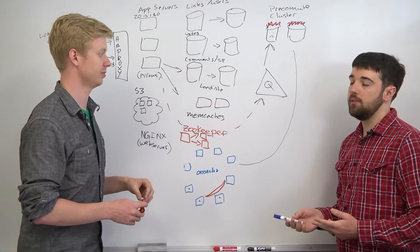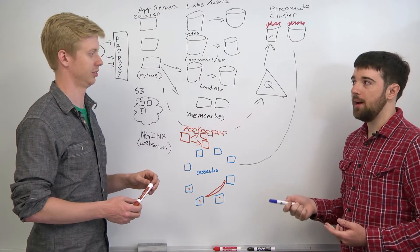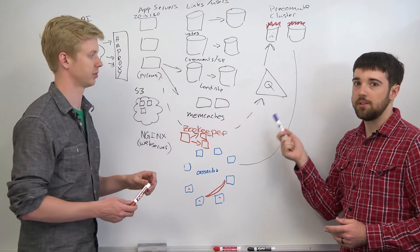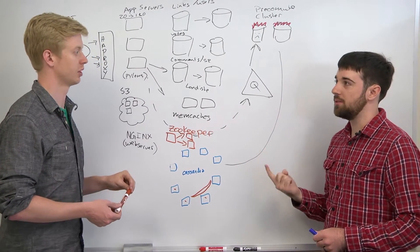Yeah, and right now even with consistent hashing, if we add one memcache like in the middle of the night, the database slaves will actually be kind of unhappy for maybe an hour or two and that's just one server.